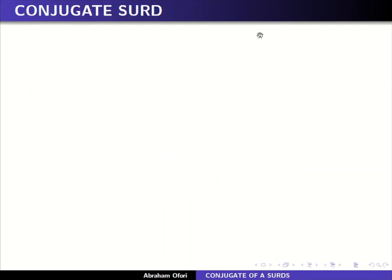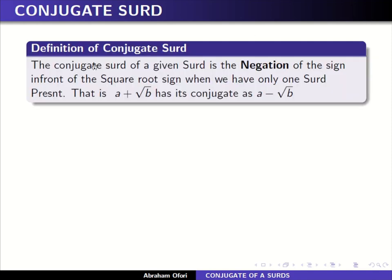Conjugate surd. So what is the definition of conjugate surd? The conjugate surd of a given surd is the negation of the sign in front of the square root sign.